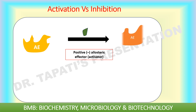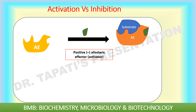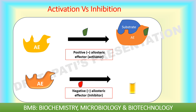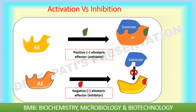When an activator binds at the allosteric site, the configuration of the catalytic site of the enzyme is changed. This changed conformation is now more suitable for substrate binding, so enzyme activation occurs and enzyme activity is increased. Whereas when an inhibitor binds to the allosteric site, the configuration of the catalytic site of the enzyme is distorted, which is not suitable for substrate binding, so inhibition occurs.